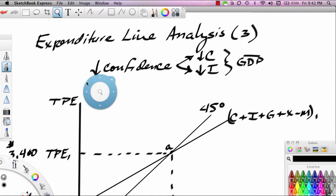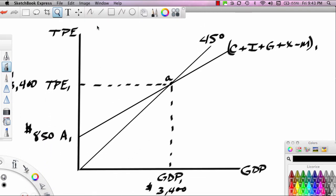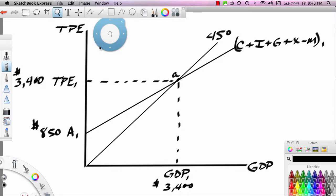We go ahead and set up our expenditure line model with the numbers we developed in the previous segment. Notice our model is set up in equilibrium at 3400. This equilibrium level was based on A of 850, and MPC was equal to 0.75 in that particular example from segment two. Based on an MPC of 0.75 and autonomous spending of 850, we determined a GDP level and TPE level in equilibrium. This is where we begin the analysis.